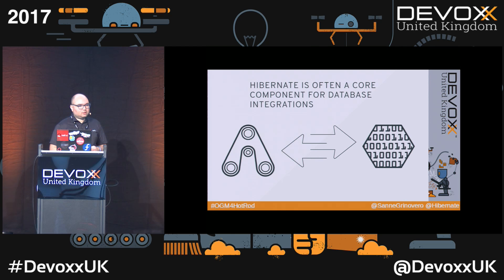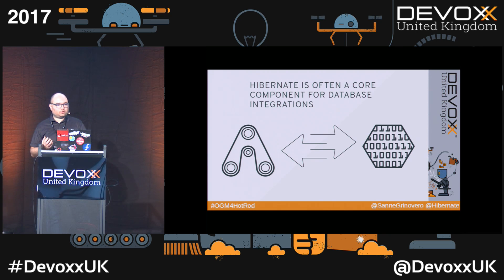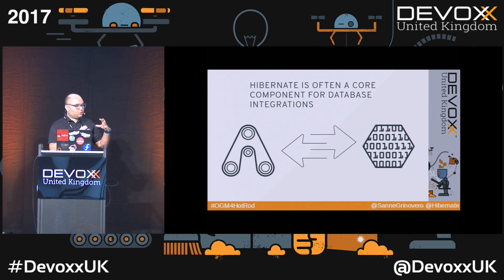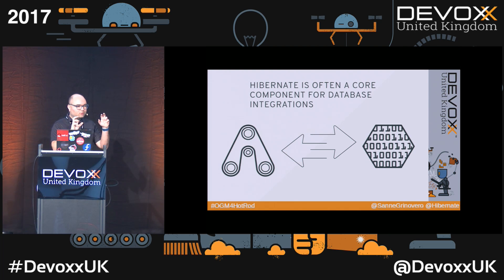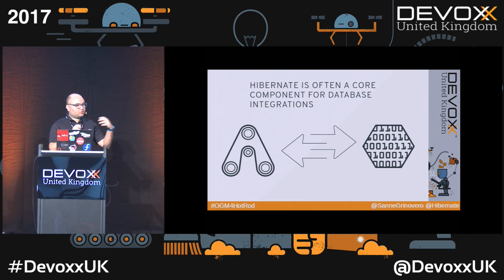What we also noticed is that in some NoSQL categories, like graph databases, graph databases actually match your Java objects quite better than a relational database, because what you have in memory is objects which are related to other objects, and you're trying to map these to some kind of different store. This mapping is hard, but when it comes to a graph database it's the same stuff — so that maps pretty well.